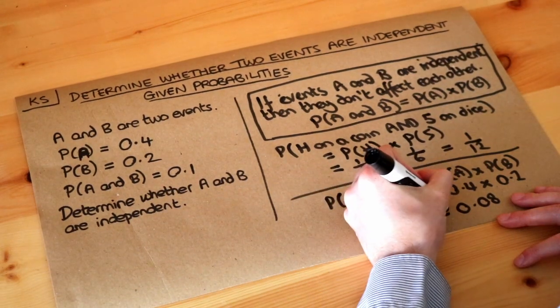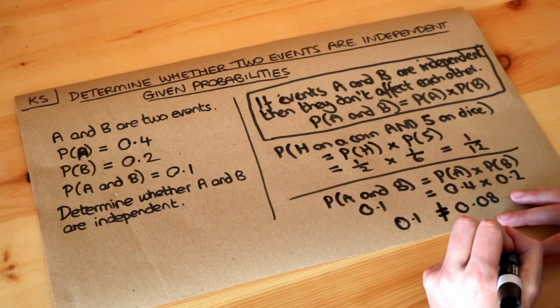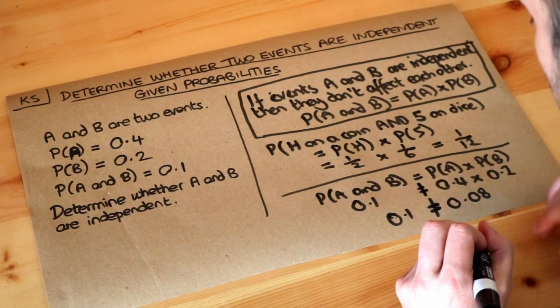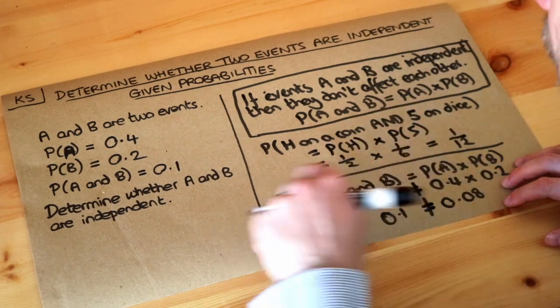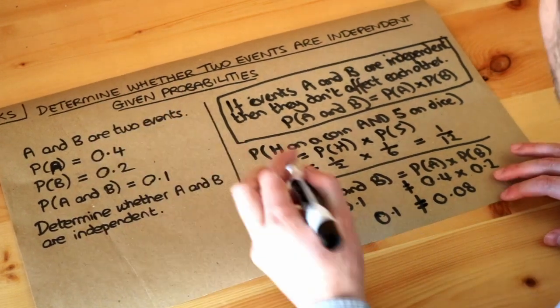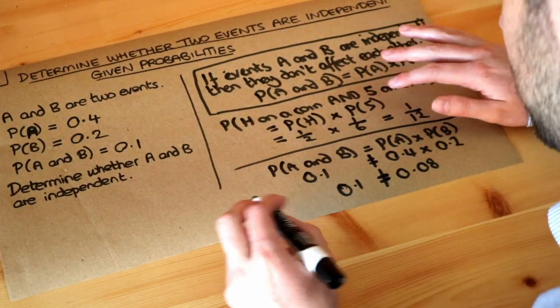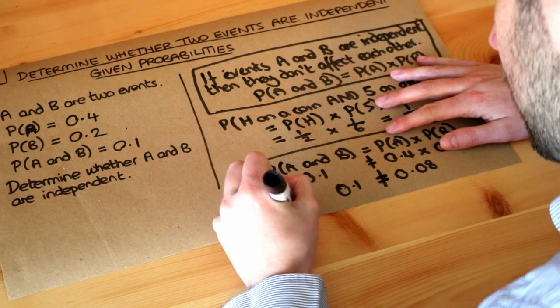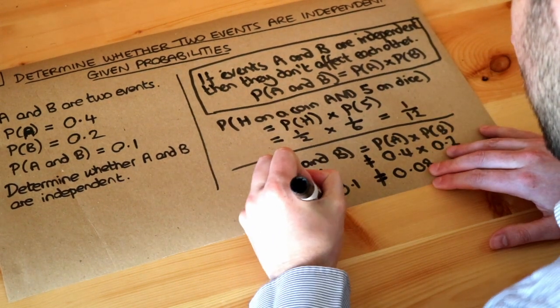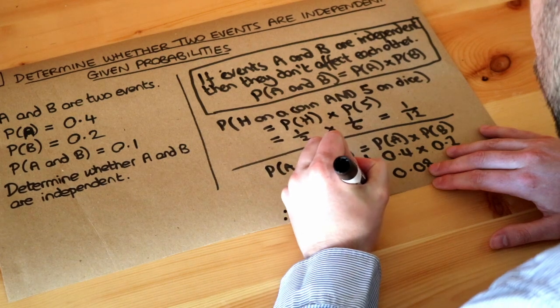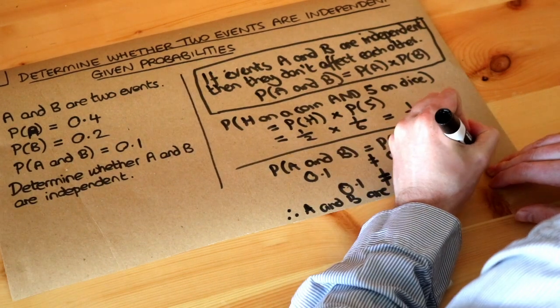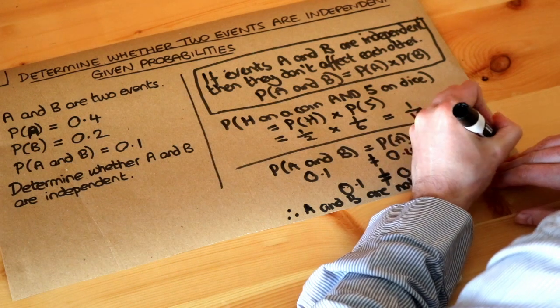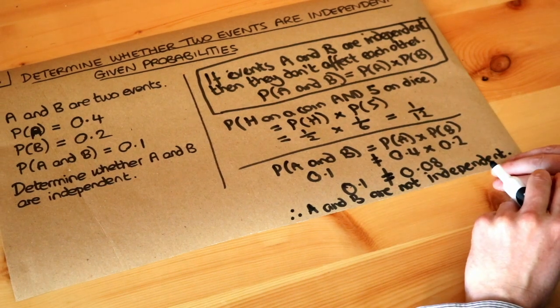Clearly they're not equal to each other, so I'll put a not equal to here. Because they're not equal it doesn't obey this formula and therefore A and B are not independent. Therefore A and B are not independent, so it means the two things A and B do influence each other.